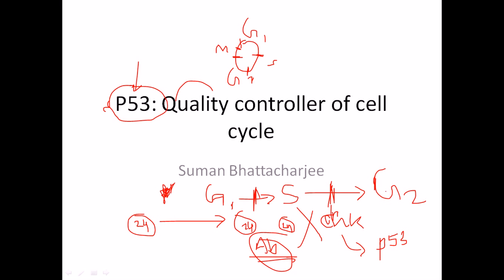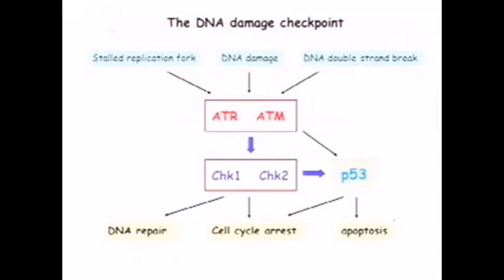That is why p53 and other molecules are really important for the quality controlling system of the cell cycle. Malfunctioning most often occurs in the S phase — the synthesis phase — where the cell needs to synthesize DNA, RNA, and protein. Wrong things happen most of the time in this S phase. There can be stalled replication forks, DNA damages due to chemical changes or mutagen activity, and DNA double-strand breaks.